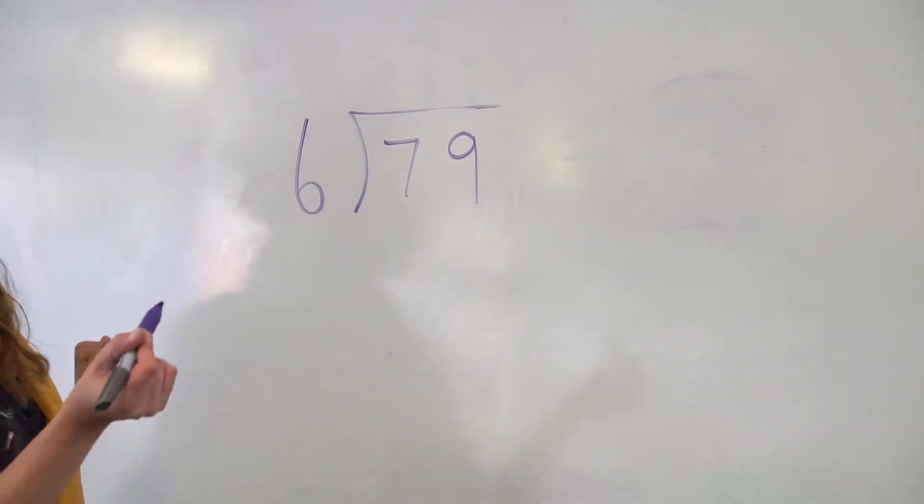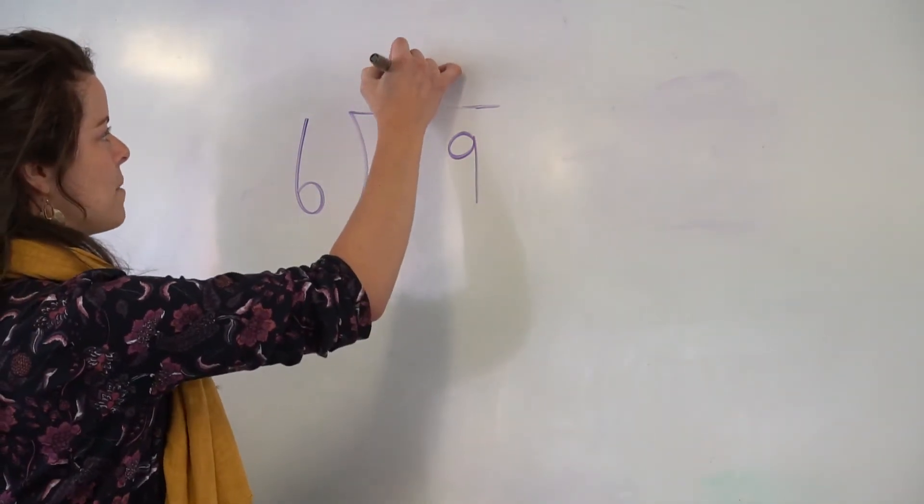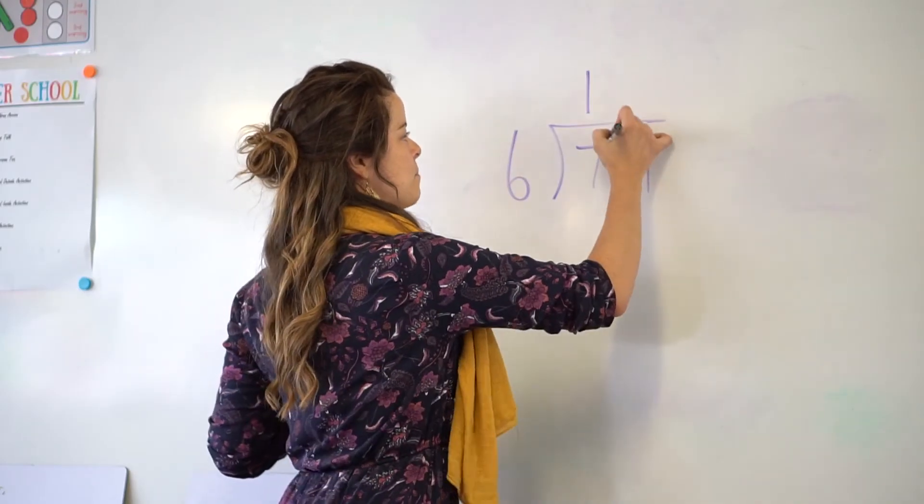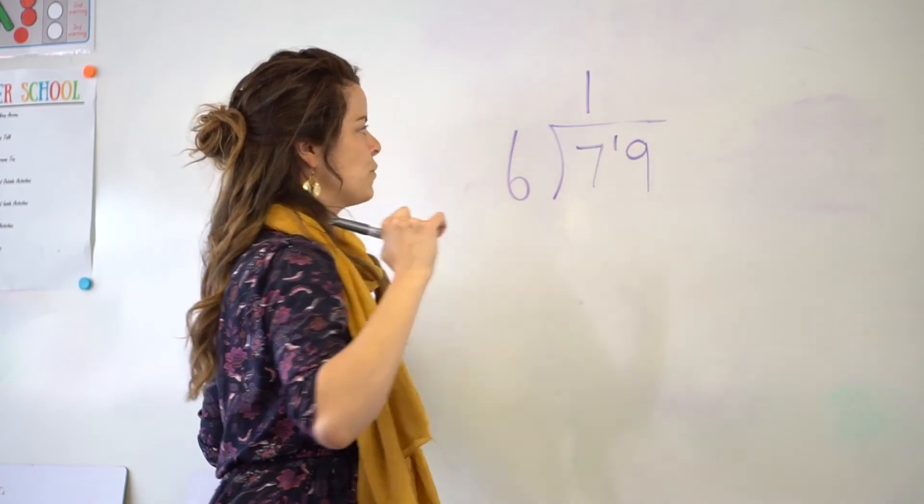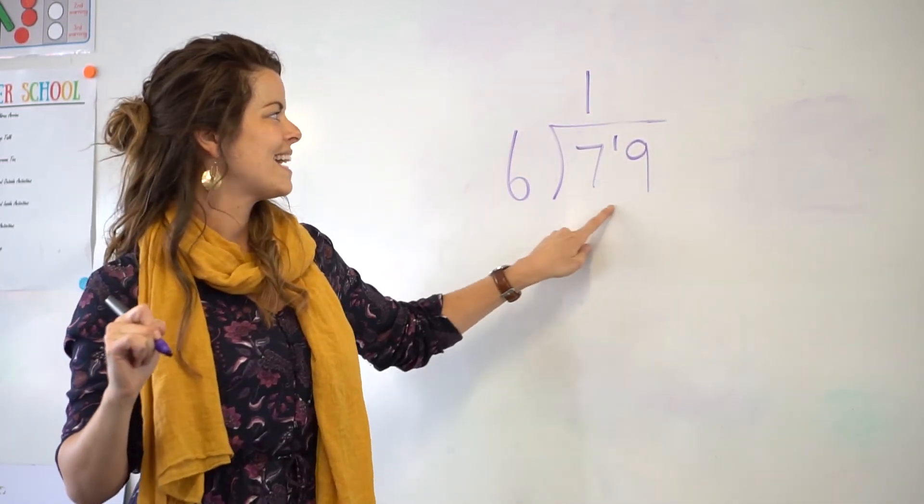7 divided by 6 goes in 1, so we pop our 1 up the top here. And then I put my remainder from there down the bottom, which now makes that a 19.